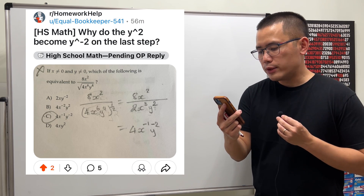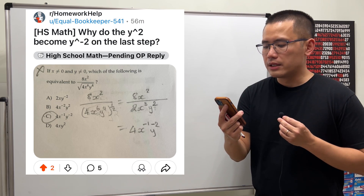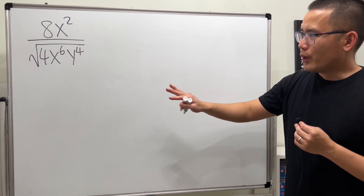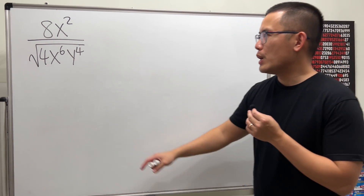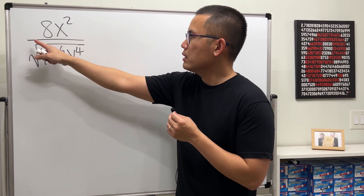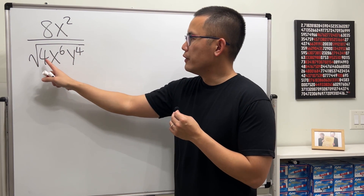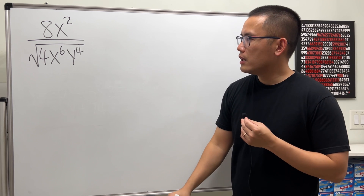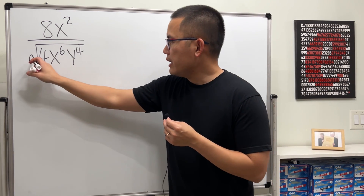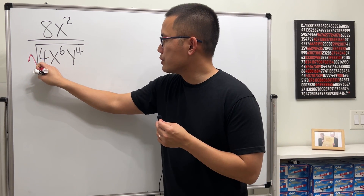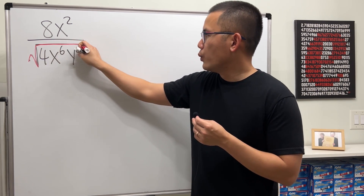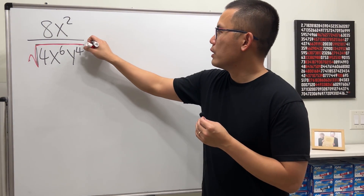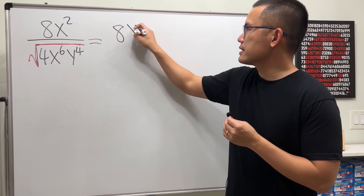Why does the y squared become y to the negative 2 on the last step? I'm going to work out everything from scratch. We are going to simplify 8x squared over the square root of 4x to the sixth power times y to the fourth power. Notice we have the square root — we can look at that as something to the one-half power.